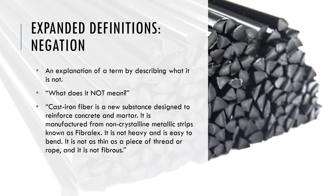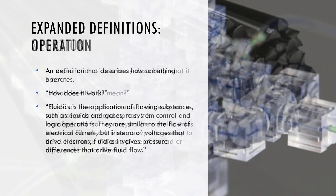Another type of expanded definition is negation — sometimes you can best describe something by describing what it is not. The example: 'cast iron fiber is a new substance designed to reinforce concrete and mortar, manufactured from non-crystalline metallic strips known as fiberlex. It is not heavy and is easy to bend. It is not as thin as a piece of thread or rope, and it is not fibrous.' We are defining the material by stating what it is not.